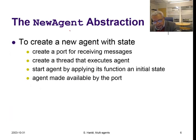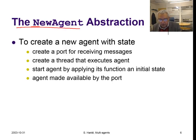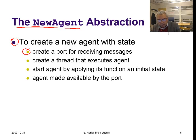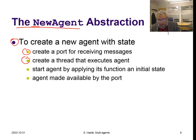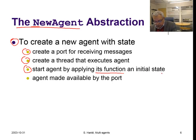We are going to define a new agent abstraction, very similar to the one for stateless agents we described before. To create a new agent, we have to create a port as usual for receiving messages, and we need to create a thread that executes the agent state transition function. We start the agent by applying the state transition function on the initial state and make the agent visible through its port.